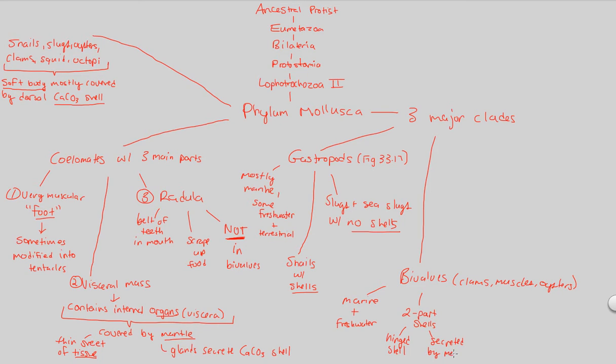It's a hinged shell. If you've ever seen a clam or an oyster, you know that it closes shut and opens because of this hinge that it has. And there are two parts to it. And the reason why it has this is because this is secreted by the mantle.